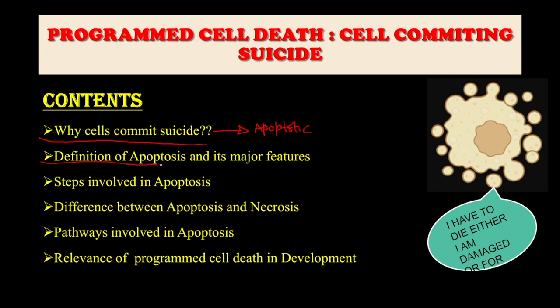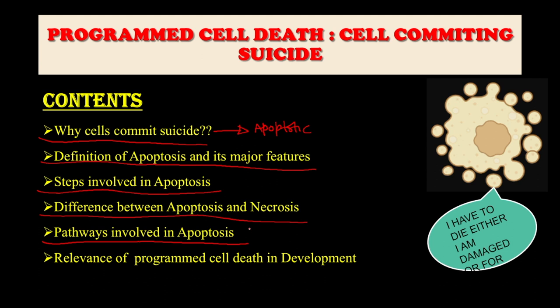Today, we are going to discuss what actually induces the cell to go for a suicide pathway or the apoptotic pathway, what is the definition of apoptosis and its major features, what are the different hallmarks of apoptosis, the steps involved in apoptosis, the difference between apoptosis and necrosis, the pathways involved in apoptosis — which can be induced by external or internal factors — and the relevance of apoptosis in the overall biology of organisms, especially development.